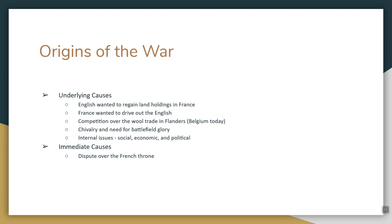France, on the other hand, wanted to control all of France. At one point, the English king controlled more French territory than the French king did. There's also competition over the wool trade in a place called Flanders — we know it better today as Belgium. And then there's that whole chivalry thing: the only way you could gain glory in feudalism was battlefield glory. There's also distraction from internal issues — social issues, the Black Death, economic problems, and political discontent. The easiest way to distract people is by having a good war.